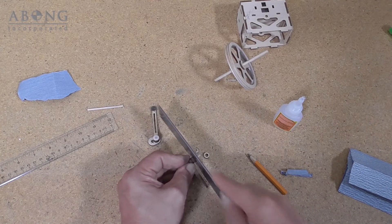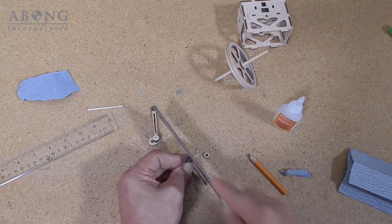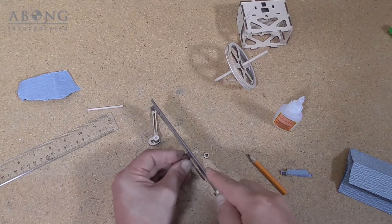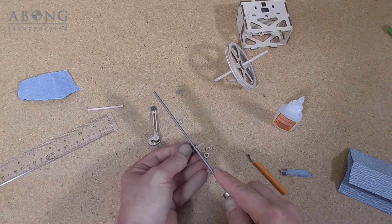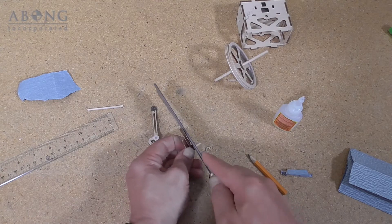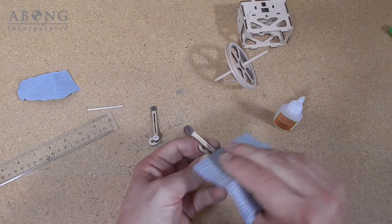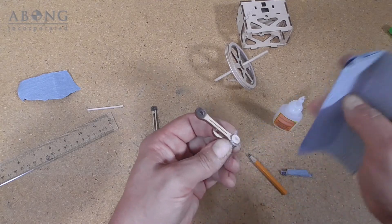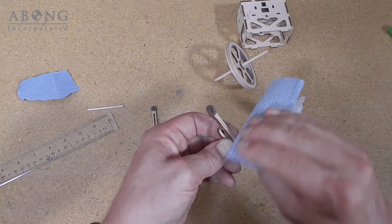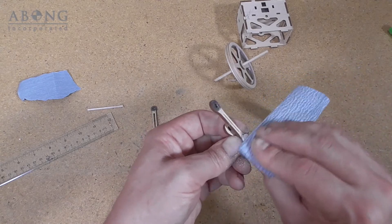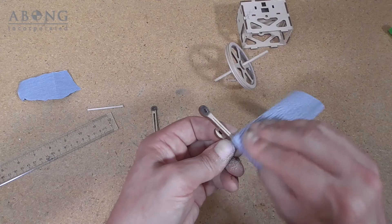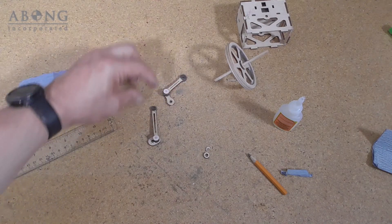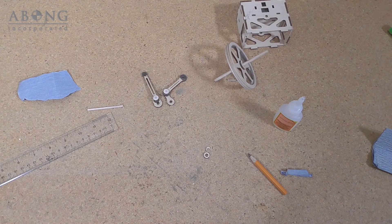We'll trim it with the razor saw and sand it flush. That looks pretty good. And our cranks are ready for the next step.